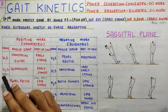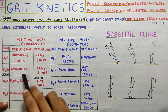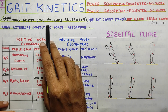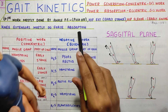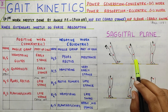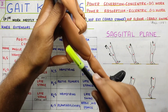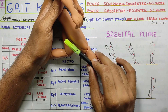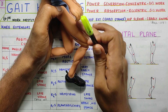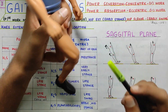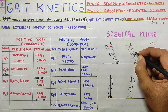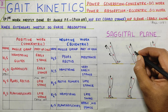Next is K2S, which involves the quadriceps. The GRF is behind the knee, causing flexion at the knee joint. This flexion is controlled by the eccentric activity of the quadriceps — that is the force absorption. So K2S is eccentric activity of the quadriceps.